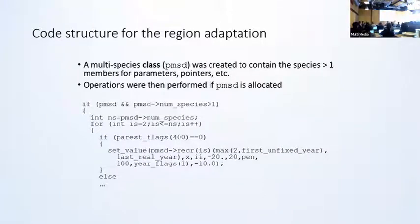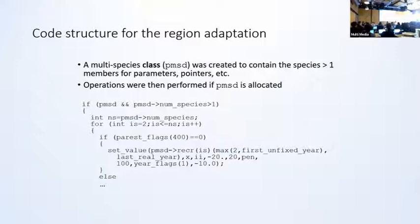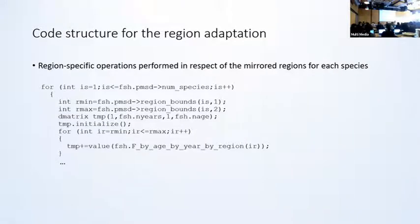This approach entailed creating a new multi-species class — what we call PMSD — with all its member objects relating to the species greater than one. Effectively, we are duplicating or creating additional class members for the additional species. In all relevant instances in the code where conditions are made in respect of that class being allocated — that is, the code now knows this is a multi-species model — the assigned members are then accessed. So in this example, this is where the recruitment parameters for species greater than one are accessed and sent to the minimizer. This class holds the recruitment parameters for species IEG.